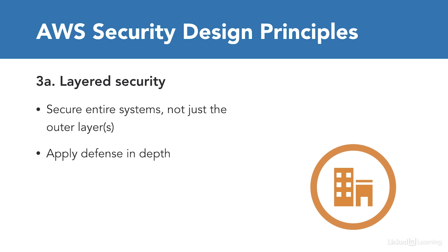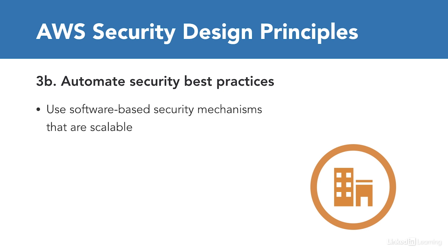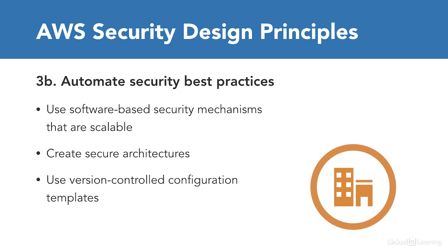Another way to say that is applying defense in depth — defense across your system and multiple layers of defense for key services such as authentication management. You want to apply this to as many layers as makes business sense. For automating security best practices, you want to use software-based security mechanisms that scale, such as a security group in AWS VPC. You want to create secure architectures that are well-documented and testable, and use version-controlled configuration templates for key services and servers.